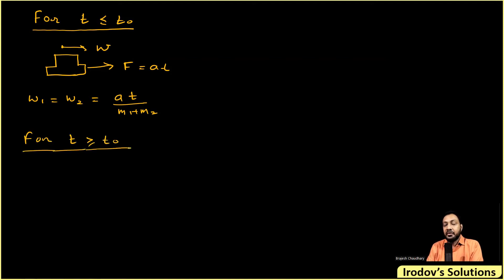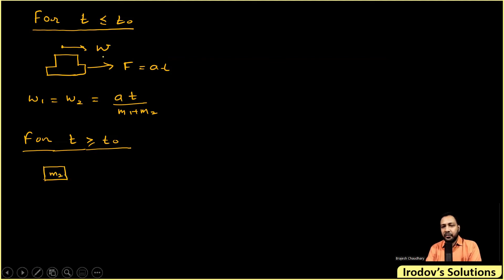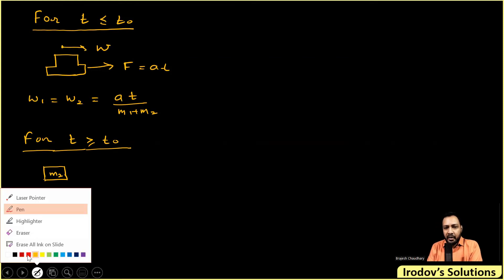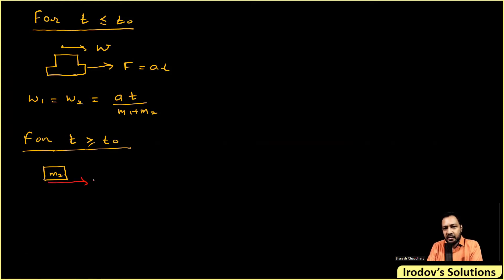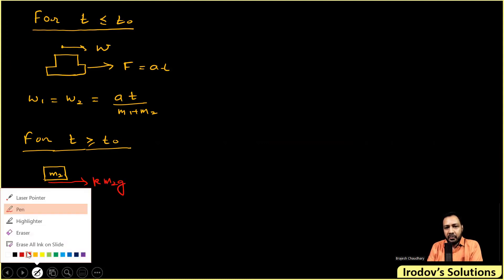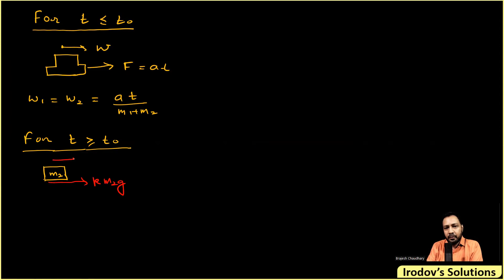For t ≥ t₀, they move separately, so we draw separate FBDs. For the upper block m2: after t = t₀ slipping has started, so friction becomes kinetic with value km2g. Its acceleration w2 = net force / mass = km2g / m2, which simplifies to k·g.